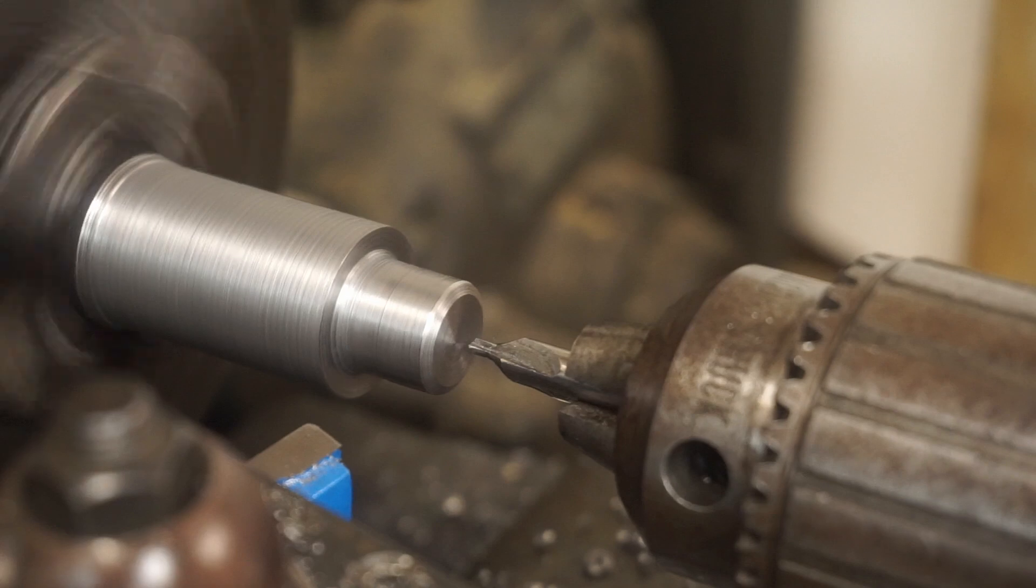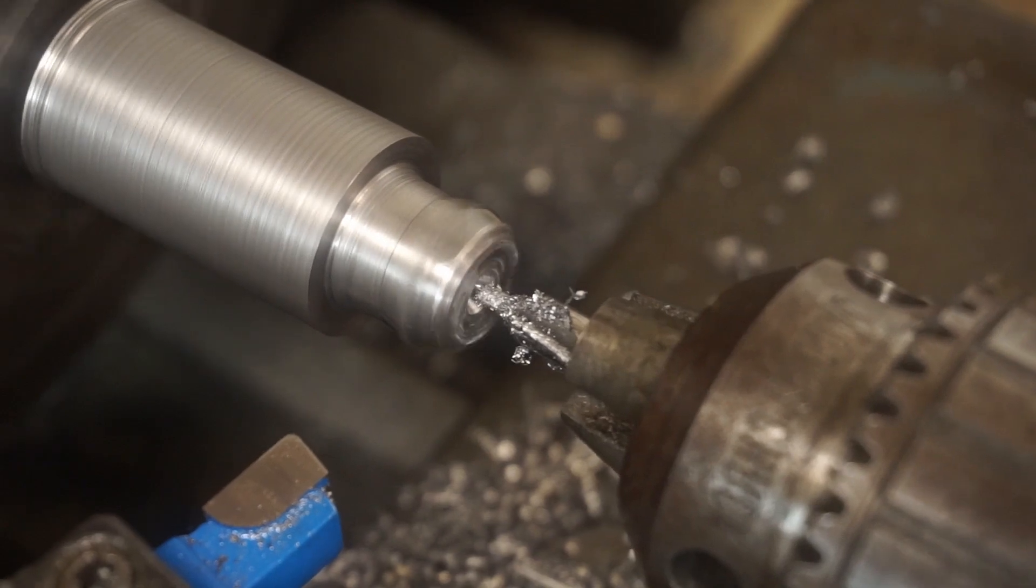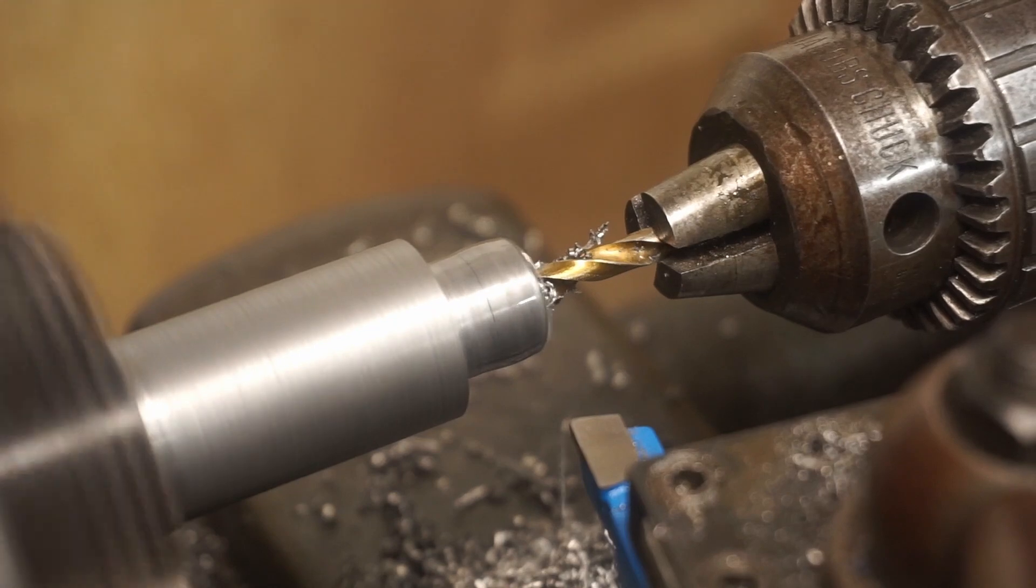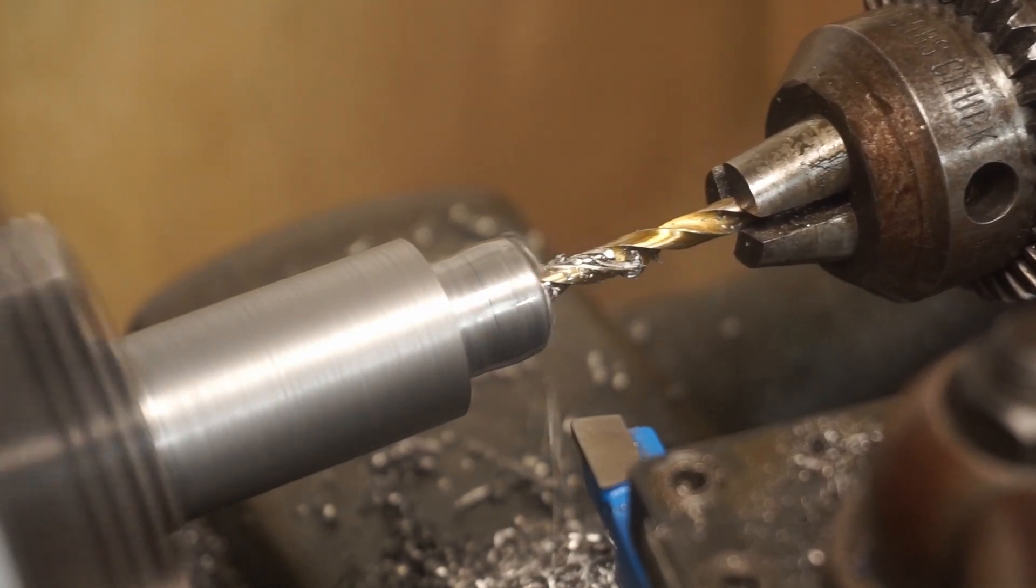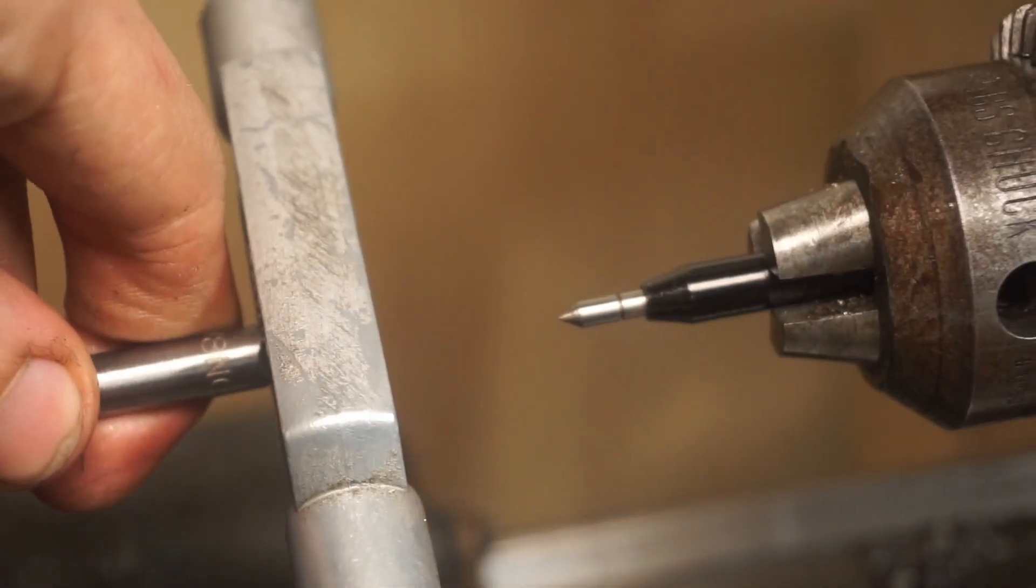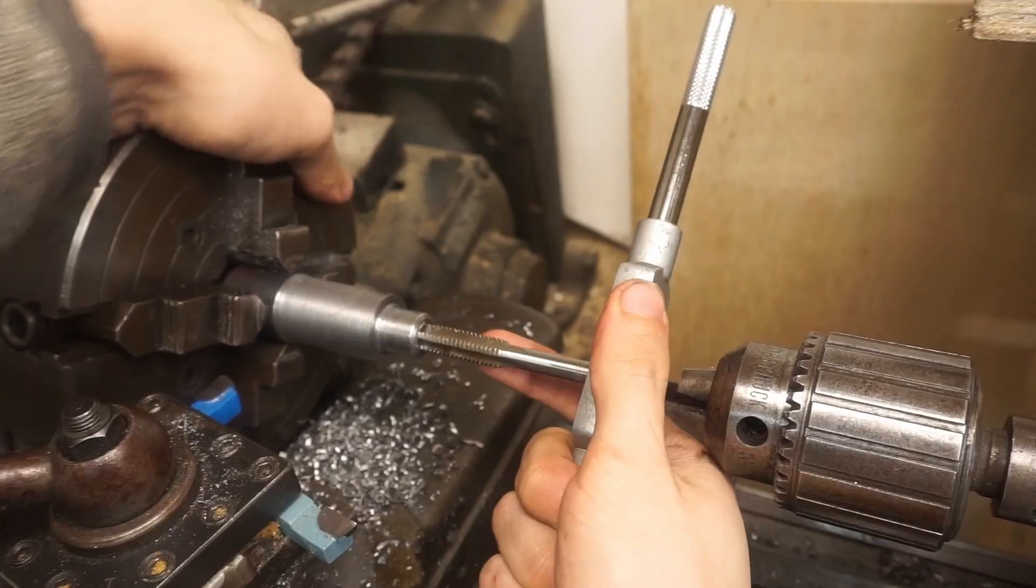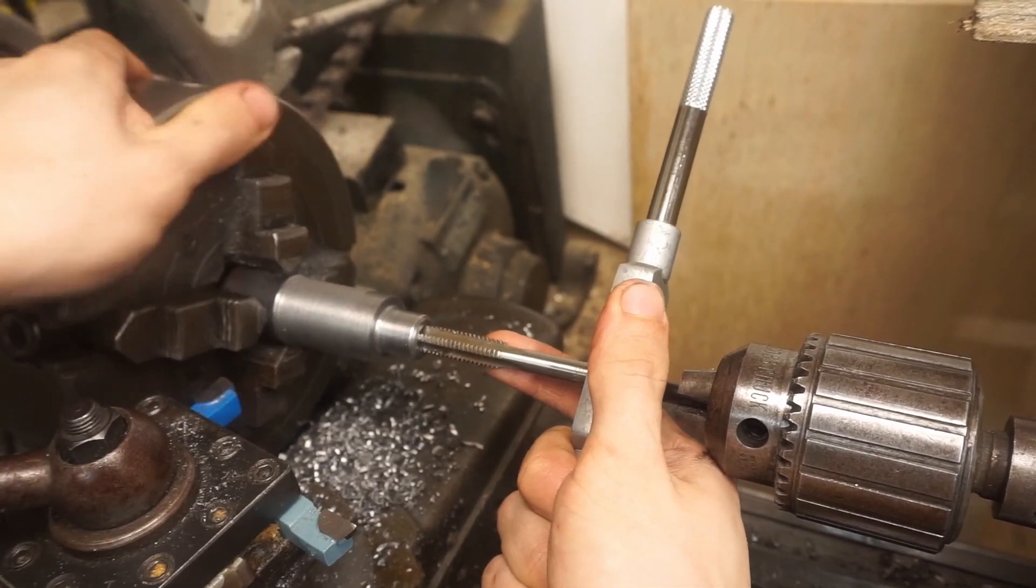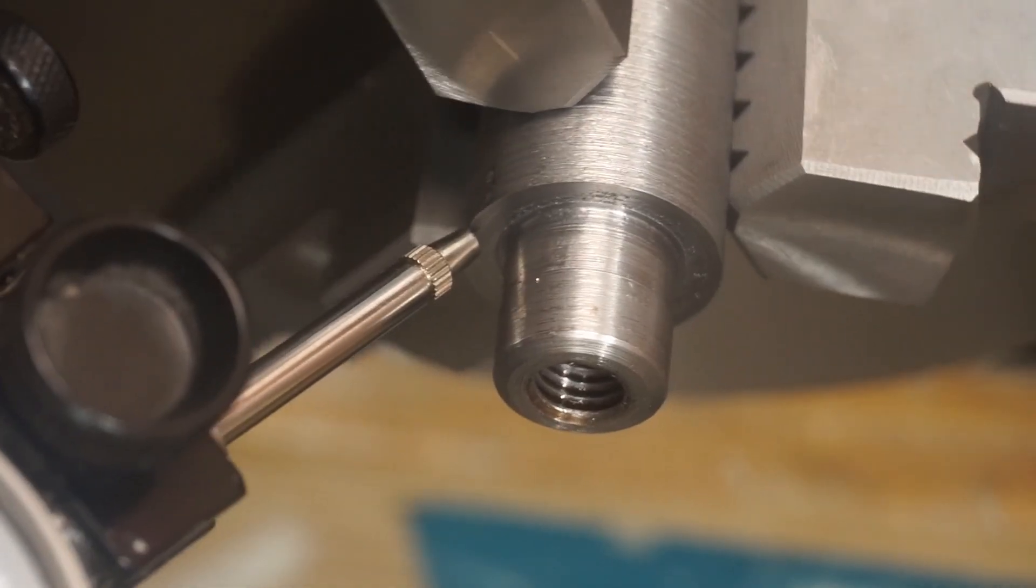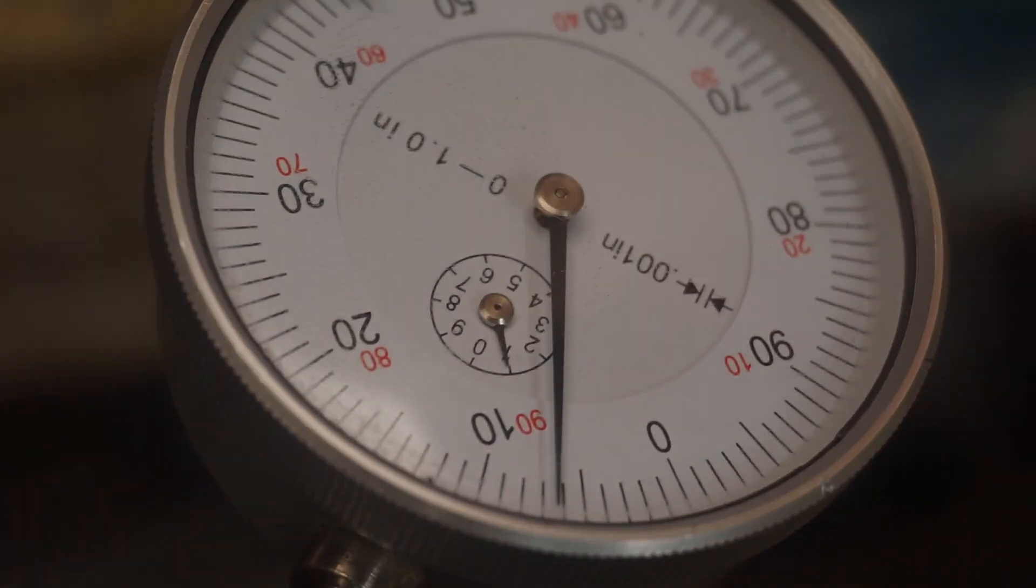Now, I'll drill a hole in the end that I'll use to hold the gear blank onto the arbor. I'll tap the hole for a bolt. Let me check how well I did. The needle on the indicator doesn't move. I might have gotten a bit lucky when I put this arbor into the three-jaw chuck, but still, very nice.